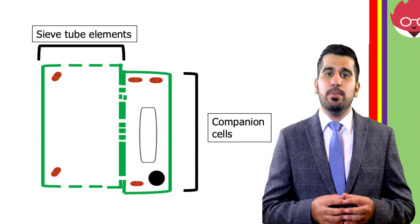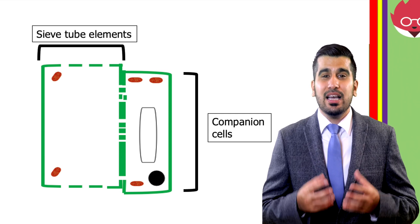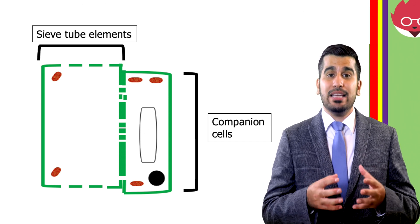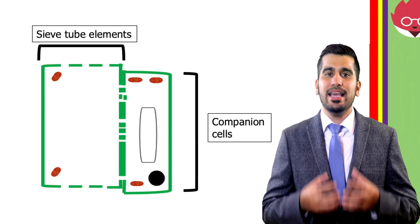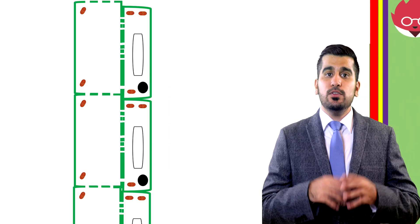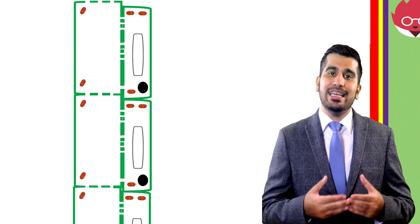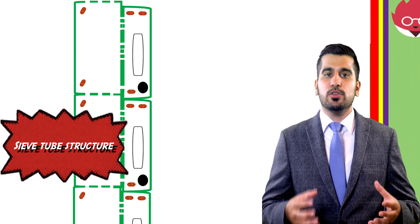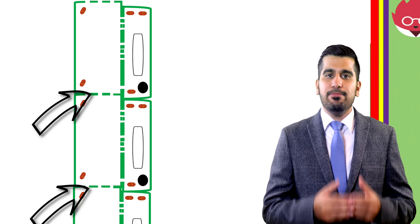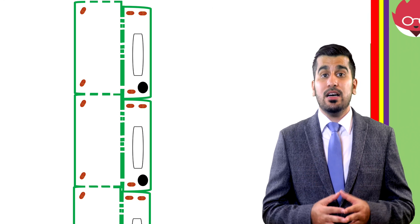If we zoom into the tissue, we can see that it's composed of two types of cells: the sieve tube elements and the companion cells. Companion cells have a nucleus, contain many ribosomes and mitochondria. They are important in helping to move sucrose into the sieve tubes. Sieve tube elements are elongated, narrow cells connected together to form a sieve tube structure of the phloem, with the sieve plate separating the cells. The sieve plates act as a barrier to prevent the loss of sap when the phloem is cut or damaged.